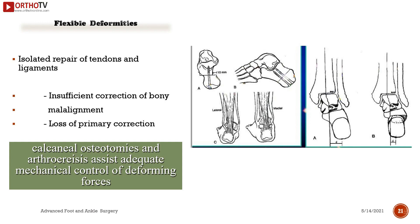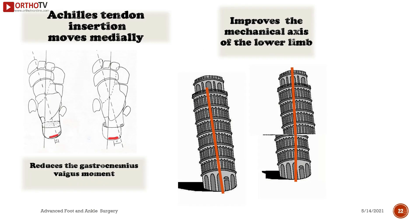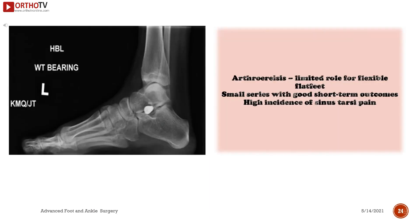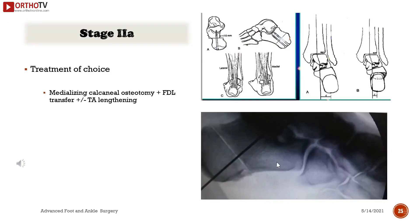Achilles tendon lengthening is the gold standard open lengthening procedure for significant flexible deformities. Isolated repair of tendons and ligaments provides insufficient correction of bony malalignment and loss of primary correction. Calcaneal osteotomies assist with adequate mechanical control of deforming forces. Arthroisis has a limited role for flexible flat feet, with small series showing good short-term outcomes but a high incidence of sinus tarsi pain.